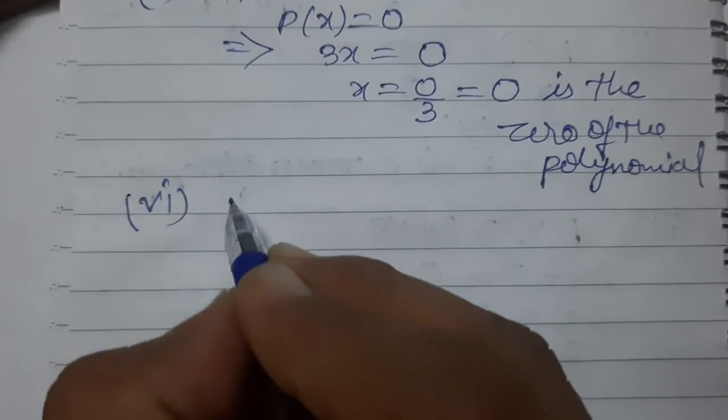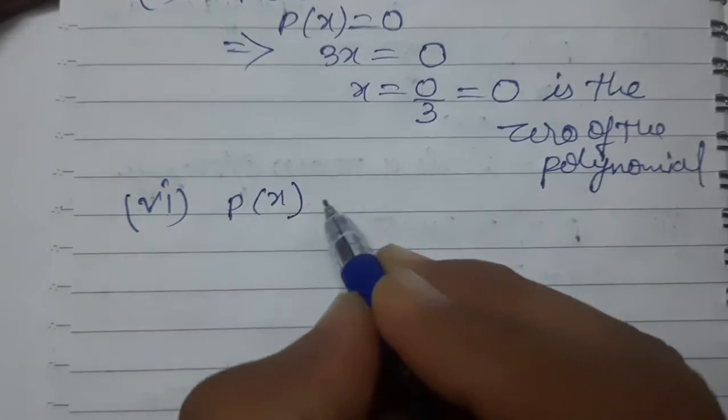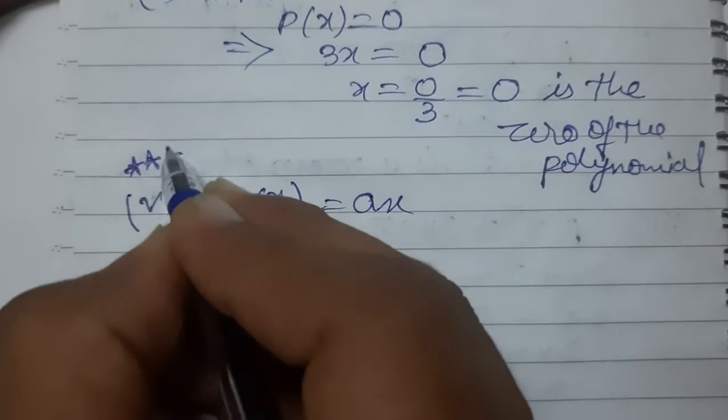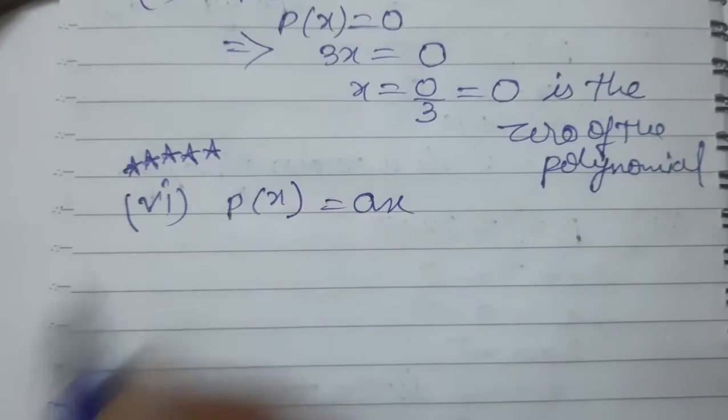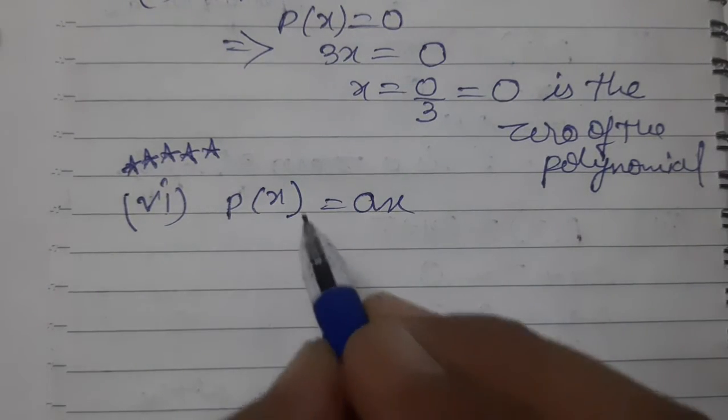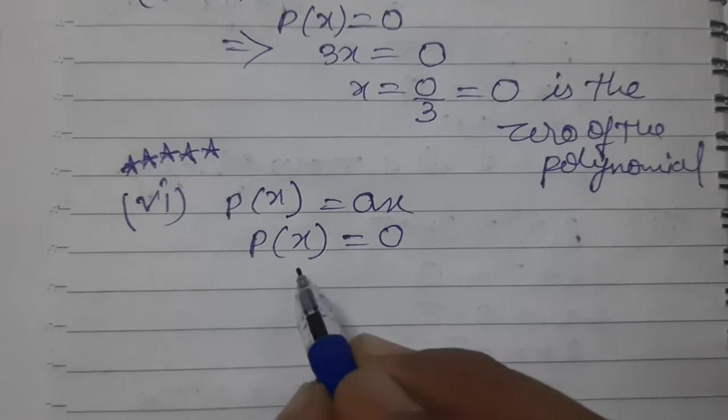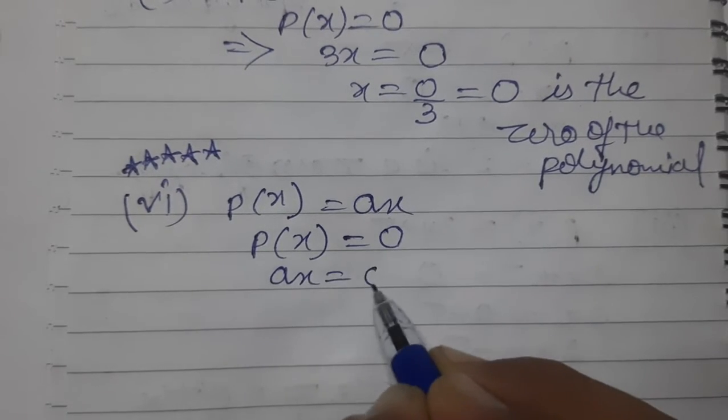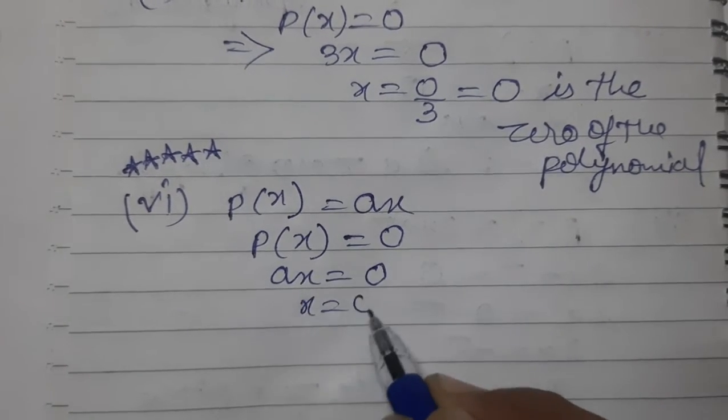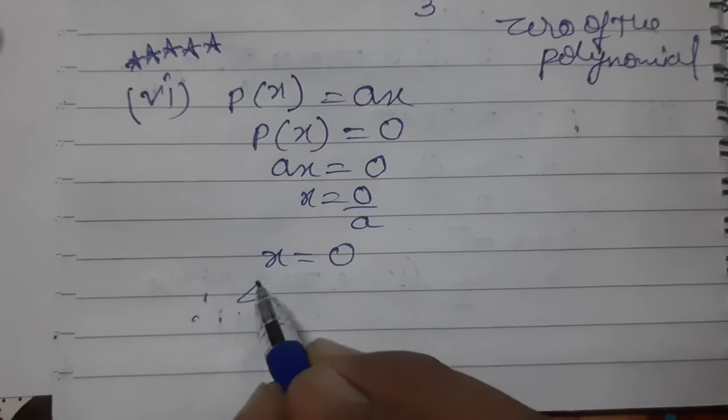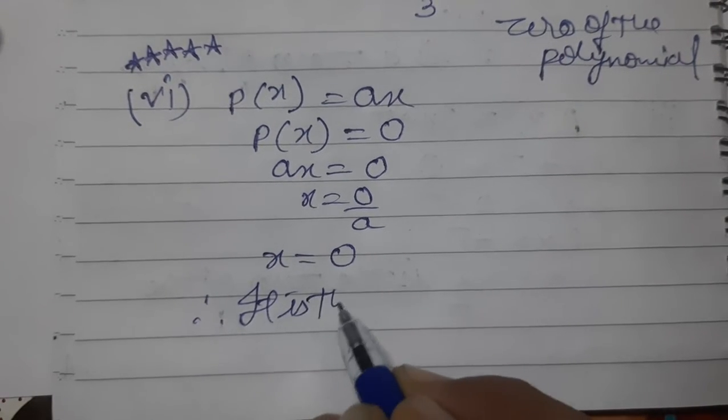Now the sixth part: P(x) equals ax. This sixth and seventh parts are very important, slightly different from the others. So we need to find the zero. Put this equal to zero first. So ax equals zero. Then x equals zero by a. Zero by a equals zero itself. Therefore, zero is the zero of the polynomial.